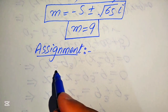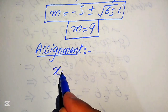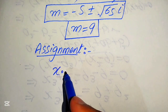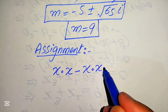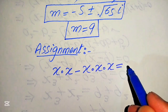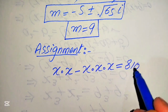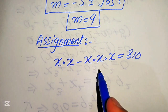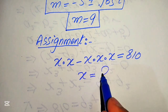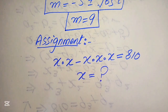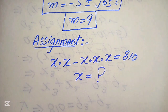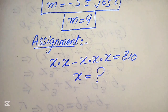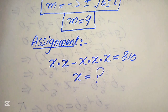The assignment question is: solve for the values of x if x multiplied by x multiplied by x multiplied by x equals 810. Solve this assignment problem for the values of x and send your solution or answer into the comment section. Thank you so much for watching this video — please subscribe to my channel for more exciting videos.